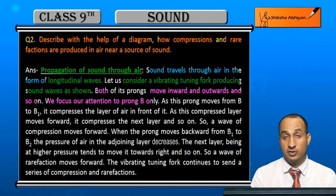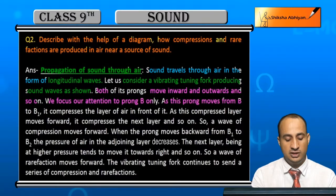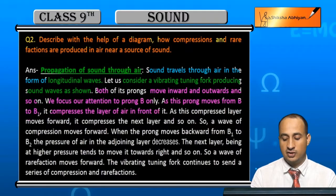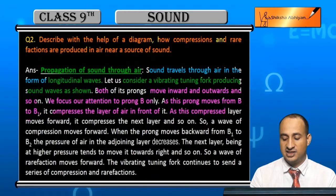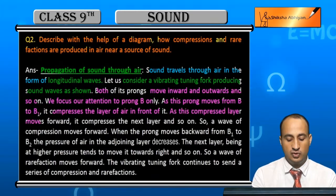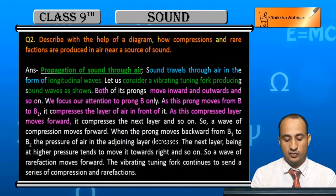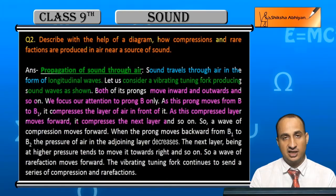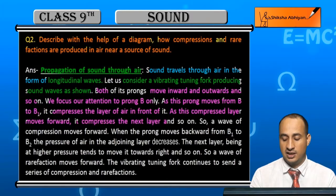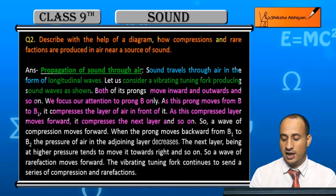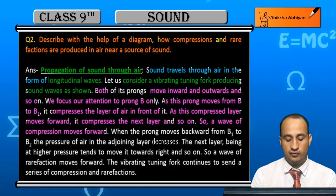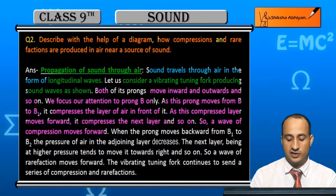We focus attention on prong B. As the prong moves from B to B1, the pressure will compress the air in front of it. And as the compressed layer moves forward, it compresses the next layer, and then the next layer, and so on. This way a wave of compression moves forward.